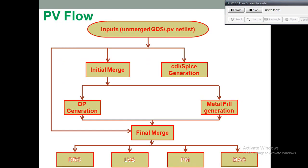Before discussing the layout, let's have a glance at the physical verification flow. Throughout the PV video series we will be discussing this flow. The physical verification flow starts from the inputs of the GDS file and the PV netlist, which are both outputs from the PNR tool. All GDS files — unmerged, initial merge, and final merge — will be discussed one by one. The PV netlist is the same as the gate-level netlist but with additional information about power and ground ports and their propagation through the design.